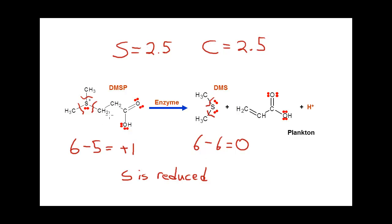We're going to focus on the carbons of DMSP. I want to calculate the oxidation numbers for these two carbons using the bond cutting method. Remember that carbon is more electronegative than hydrogen — hydrogen has an electronegativity of 2.1. I'll draw the hydrogens bonded to the carbon. Both electrons in each carbon-hydrogen bond are formally assigned to carbon. Carbon-carbon and carbon-sulfur bonds are cut equally since those atoms share the same electronegativity.